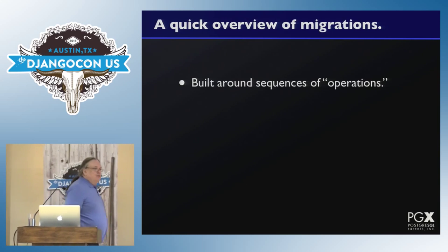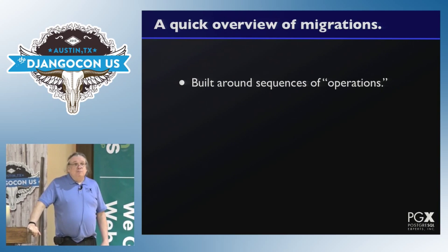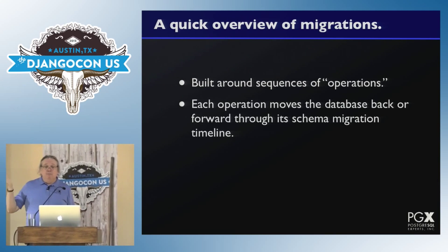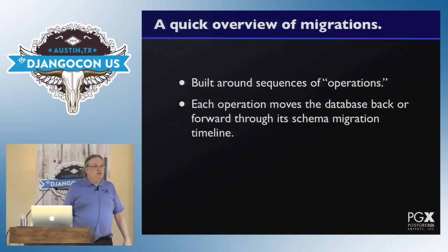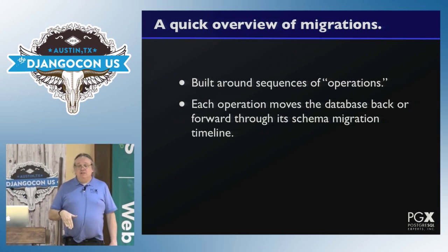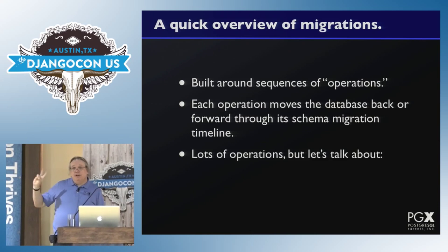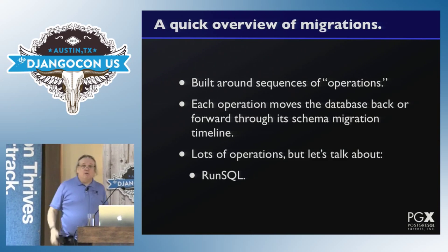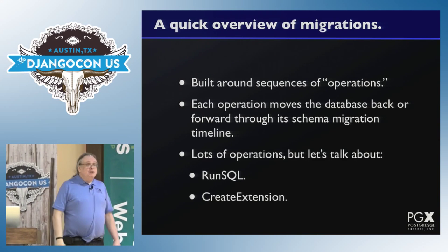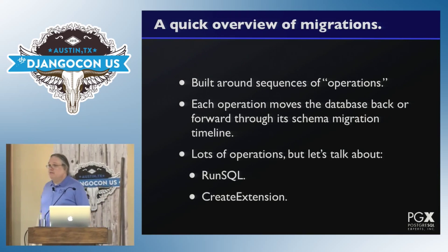A quick overview for anyone who hasn't used the 1.7 migrations or has been treating it like a black box: migrations are built around this notion of operations. Each operation in a migration moves the database back or forward through its schema migration timeline — it adds a field, adds a table that corresponds to a model, things like that. There are lots of individual operations, but two super interesting ones are RunSQL and CreateExtension, which are built into the core Django framework and can be used in your own migrations.